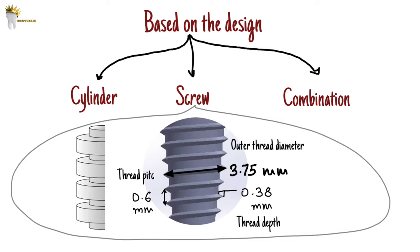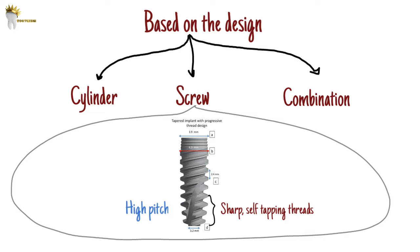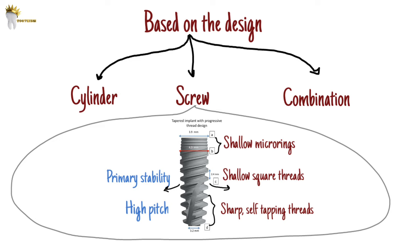To combine the benefits of both thread designs, there are variable thread implants. At the apical third, there are sharp, self-tapping deep threads with high pitch value — pitch being the distance between the threads, so high pitch means more space between threads. This apical third prepares threads in the bone. The middle third has shallow square-type threads that get incorporated into the threads already prepared by the apical third, giving primary stability by laterally condensing the bone around them. The crestal part has very shallow micro-rings because the crestal bone has high density and low vascularity, so you don't want to pressurize it with big threads that may cause pressure necrosis of the crestal bone.